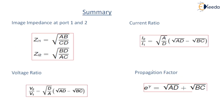In summary: in part 1, we calculated image impedances at port 1 and port 2 in terms of ABCD parameters. In part 2, we have calculated current ratio, voltage ratio, and propagation factor in terms of ABCD parameters. These are the summary of image impedance and transfer function of a two-port network in terms of ABCD parameters.